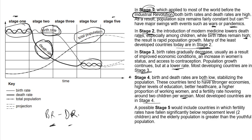Stage five is where some countries are now tending towards, where the death rate is becoming higher than the birth rate. As death rate exceeds birth rate, there will now be population decline and the population will begin to decrease. Stage five includes countries where the fertility rate has fallen significantly below replacement level, and the elderly population is greater than the youthful population. That is what the DTM theory is all about.